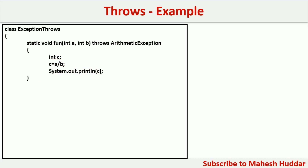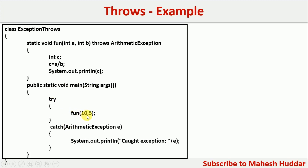But if the value of b is equal to 0, it will generate an ArithmeticException. Because this method can generate an exception, wherever we have called this method we must have a try and catch block to handle it. So in the main method, I have called this fun method with 10 and 5. There is a possibility this method may generate an ArithmeticException — because I have written throws ArithmeticException in the method definition — so we can assume that, and because of that we should have an associated try block and catch block wherever it is called. This is how we use the throws keyword to handle exceptions in Java.